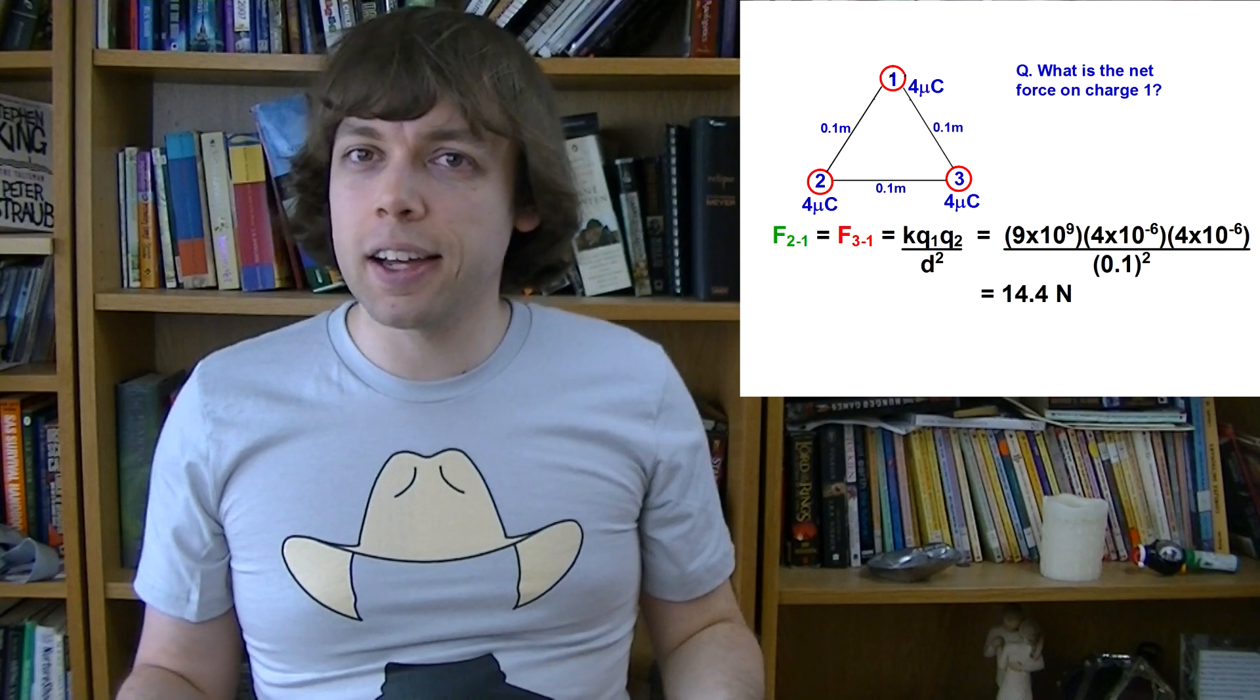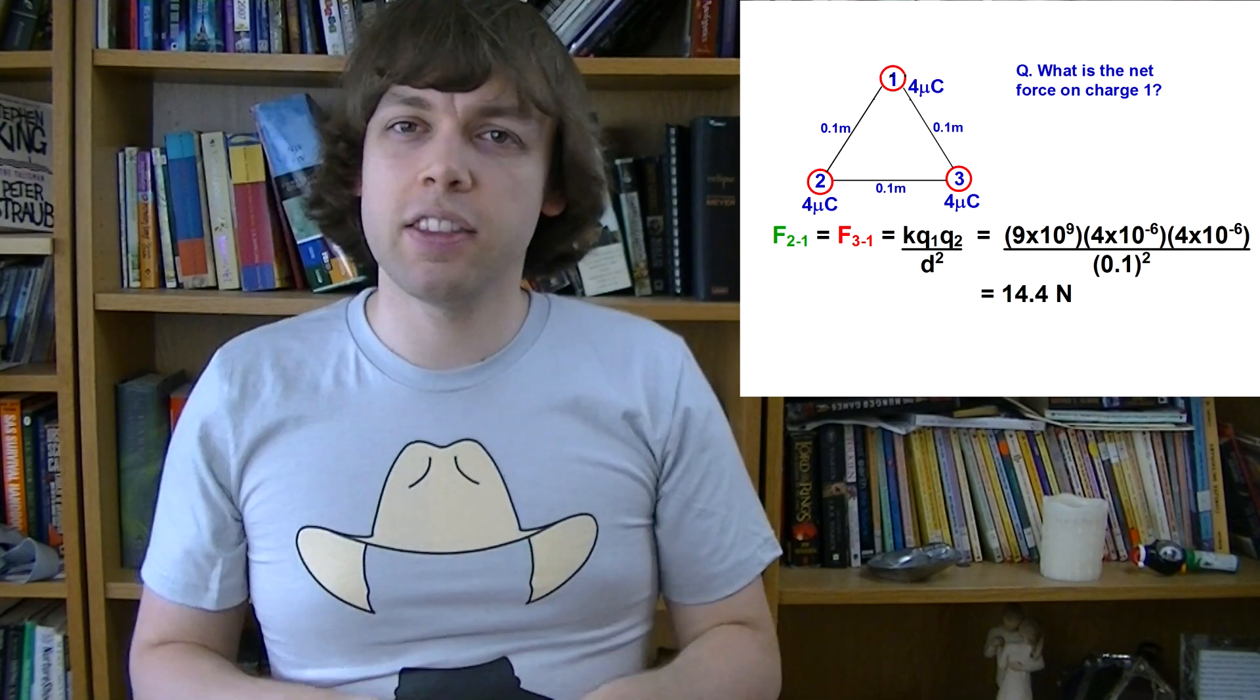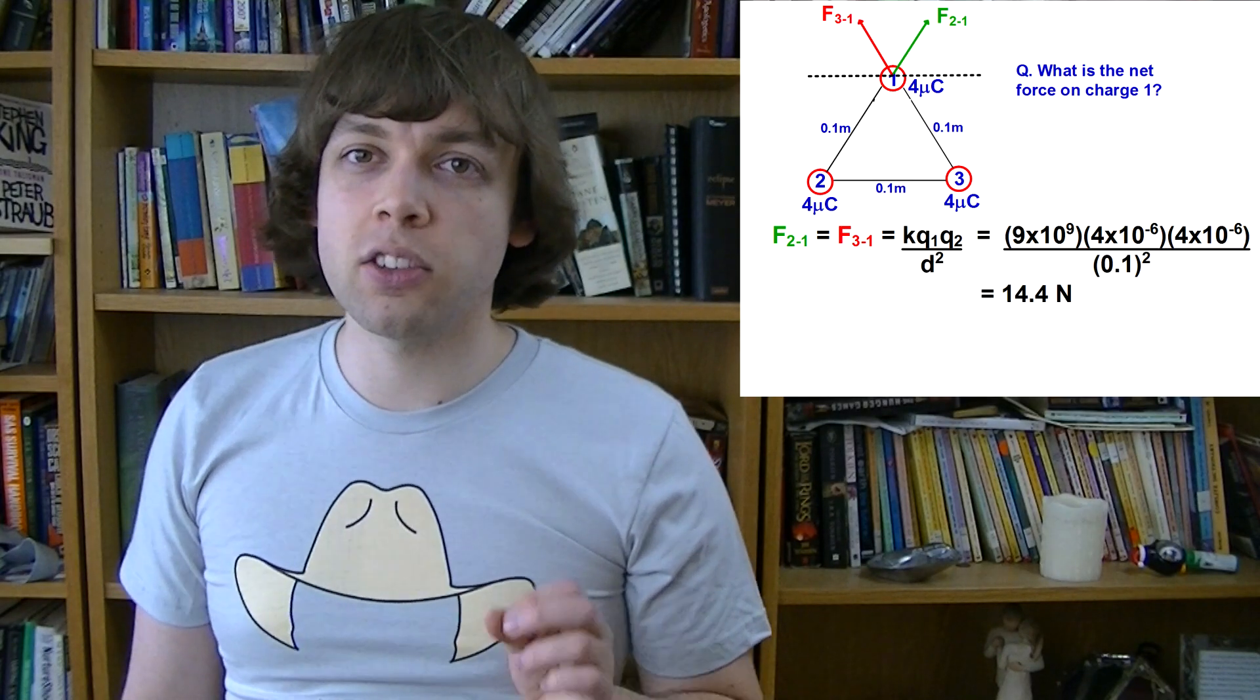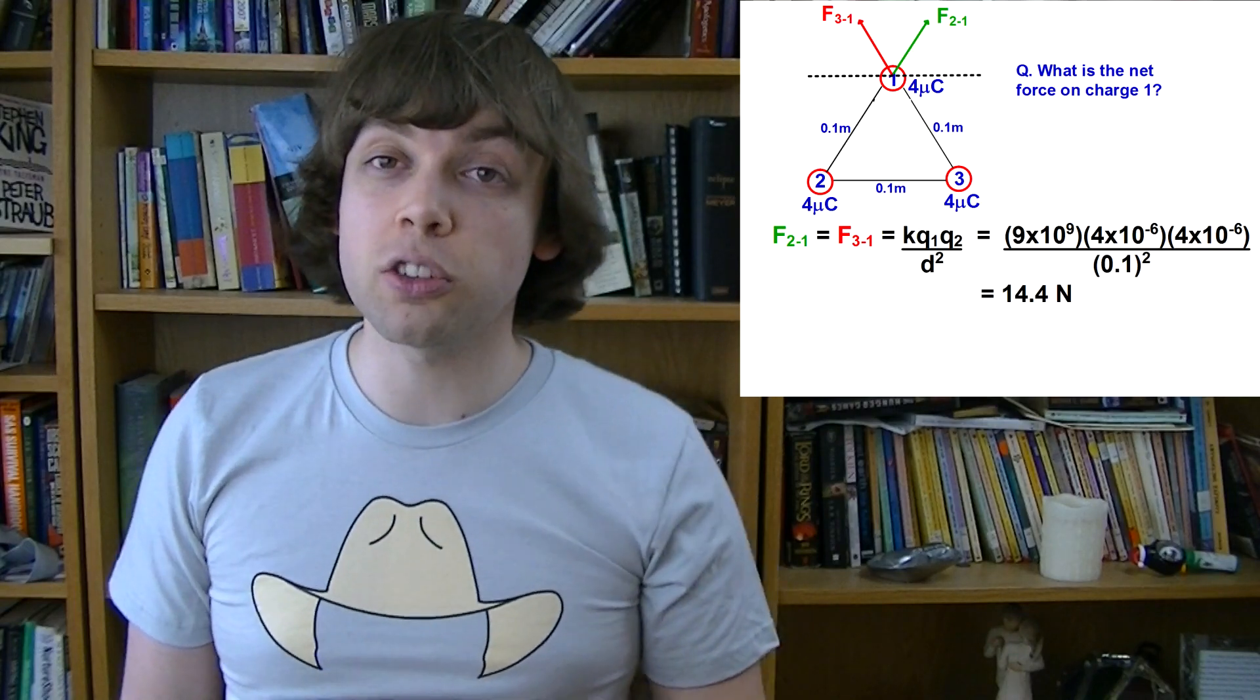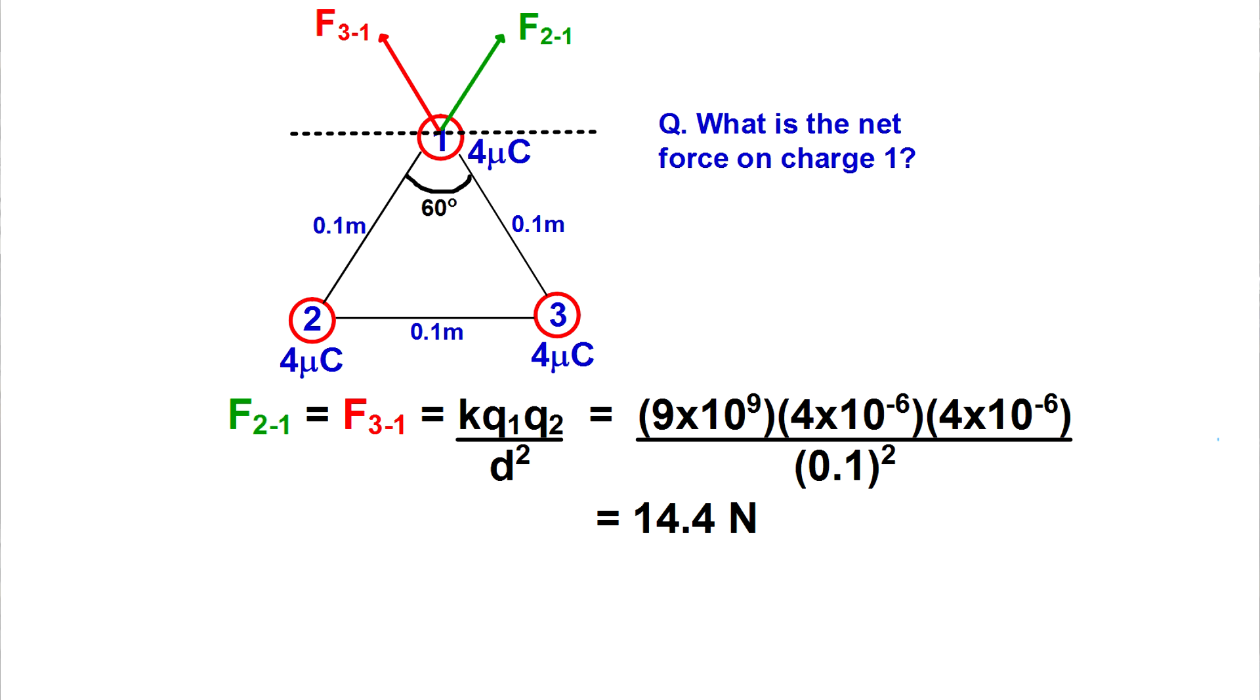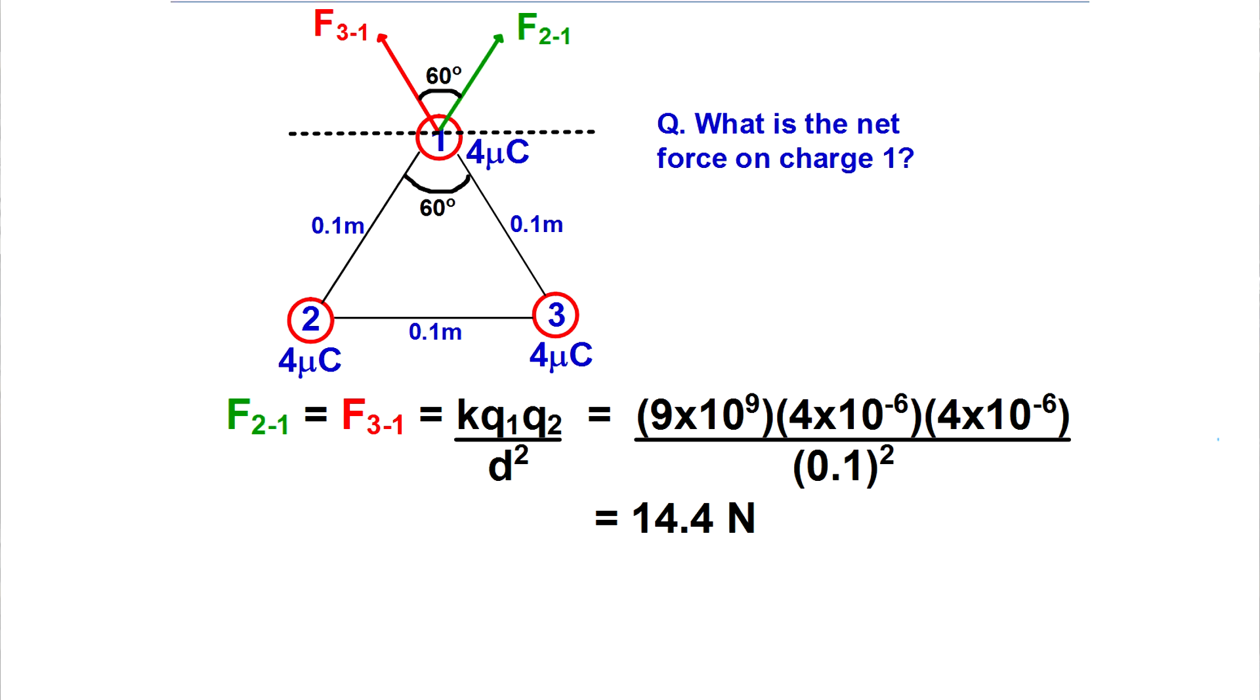But in this question, they're not in a straight line. So we can't simply add or subtract these two forces. These are vectors, and they're acting diagonally. Since all three charges are positive, they're going to repel each other. Charge 2 is going to be pushing charge 1 up this way, and charge 3 is going to be pushing charge 1 up this way. Since these forces are acting diagonally, we'll have to break them into components, just like we did in the forces videos. So first we need to figure out some angles. The angles inside an equilateral triangle are always 60 degrees. So this angle here will also be 60 degrees, and these angles will also be 60 degrees.